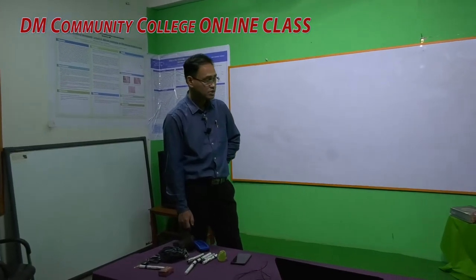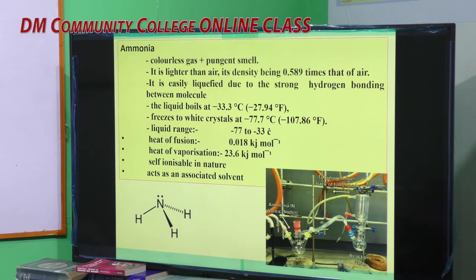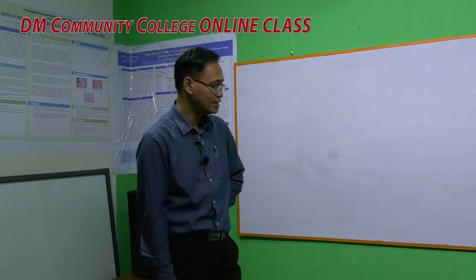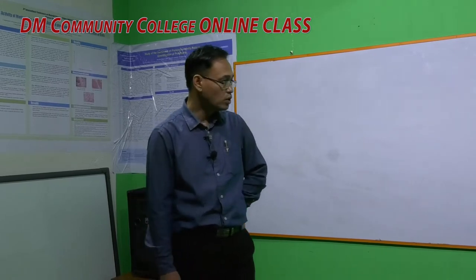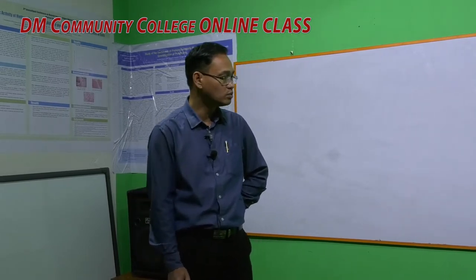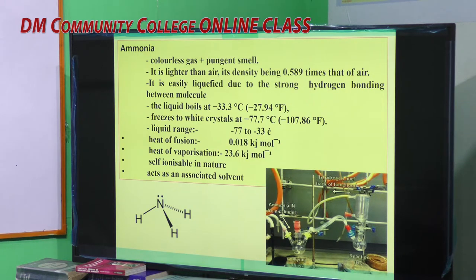The liquid range of ammonia — the range in which liquid ammonia is stable and reactions can be carried out — is from minus 77 to minus 33 degrees centigrade. Its heat of vaporization is 23.6. It is self-ionizable in nature and acts as an associated solvent. To work in liquid ammonia, we must use reaction conditions and instruments that maintain low temperature and high pressure.